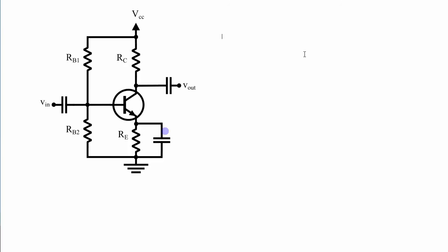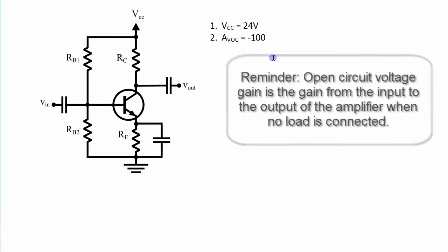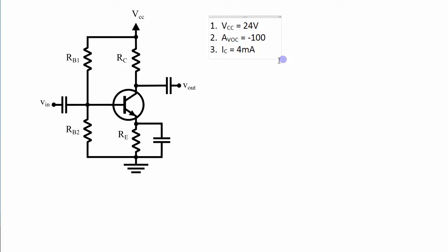So the criteria for this particular amplifier that I am going to design are VCC or my supply voltage needs to be 24 volts, my open circuit voltage gain needs to be 100 or negative 100, this is an inverting amplifier, and I need to have my collector current at 4 milliamps for biasing.